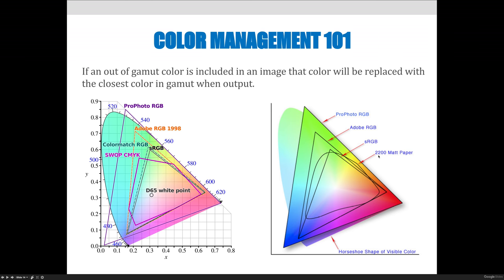And then this one, 2200 matte paper, is a printing color output and you can see all the colors inside this little wavy line are the colors that you could create using that particular printing setup.